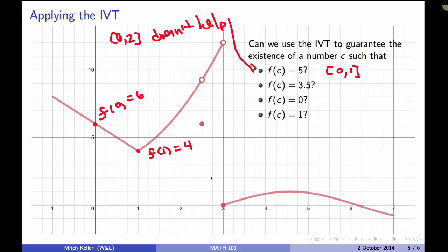What about 3.5? Here's where we have to be careful in that we need continuity, because if we notice that f(3) equals 0, you might be tempted to say 3.5 lives between 4 and 0, and f(1) equals 4, and f(3) equals 0, but the function is not continuous on the interval [1,3], so we can't use the IVT.